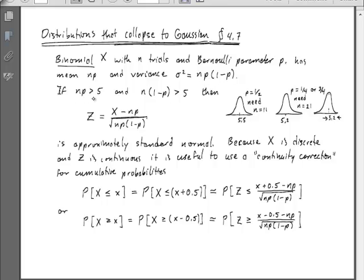If the mean, or if np is greater than 5 and n times 1 minus p is greater than 5, then we can define the standard normal variable Z as x minus np, which is our mean, divided by the standard deviation. We see that this Z becomes approximately standard normal.